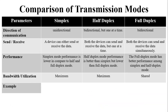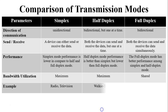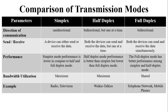Examples: simplex mode — radio or television; half duplex — walkie-talkies; full duplex — telephone network or mobile phones. We have already discussed all these examples in the previous video where all the transmission modes were covered in detail.